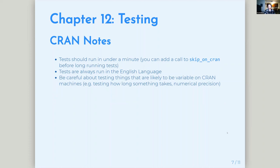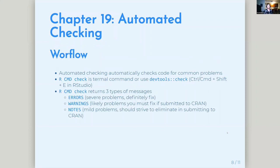The book recommends that if a test doesn't run in under a minute, you might want to call skip_on_cran(). Tests are also always running in the English language, so weird characters in your test files might cause issues. Things are likely to be variable on CRAN — like how long something takes, numeric precision, or running things in parallel is not a great idea. That's kind of a summary of the testing chapter. It was pretty short actually.